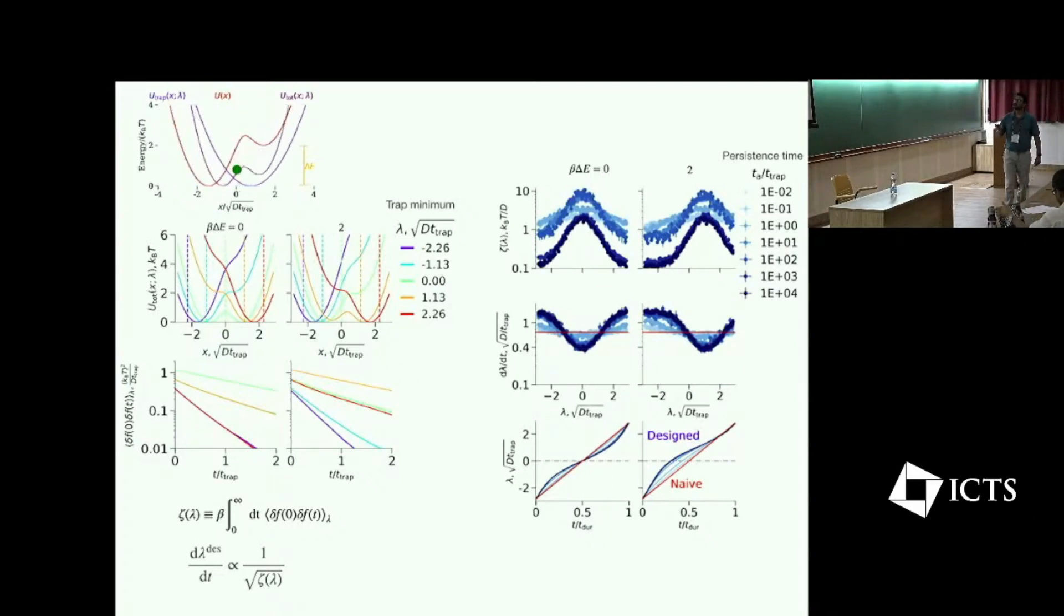So I'm showing three different quantities and color intensity increases with the value of persistence time. In the first row I'm showing friction coefficient as a function of trap location. So friction coefficient is maximum for some particular lambda for which the total potential has double well kind of behavior.